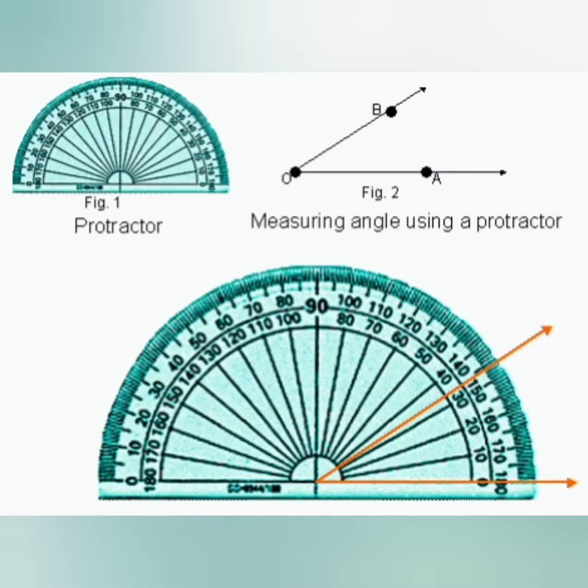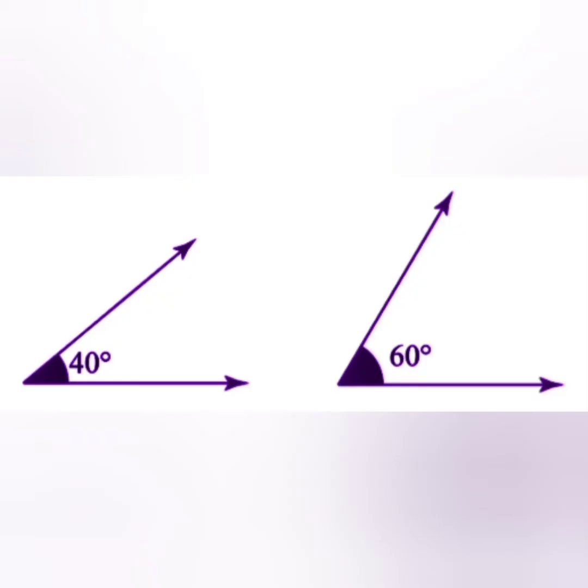Angles are measured using protractor. The angle between two arms joining at a point is measured in degrees. In this example, the first angle shows 40 degrees and the next one shows 60 degrees. A degree is the unit for measuring angles.